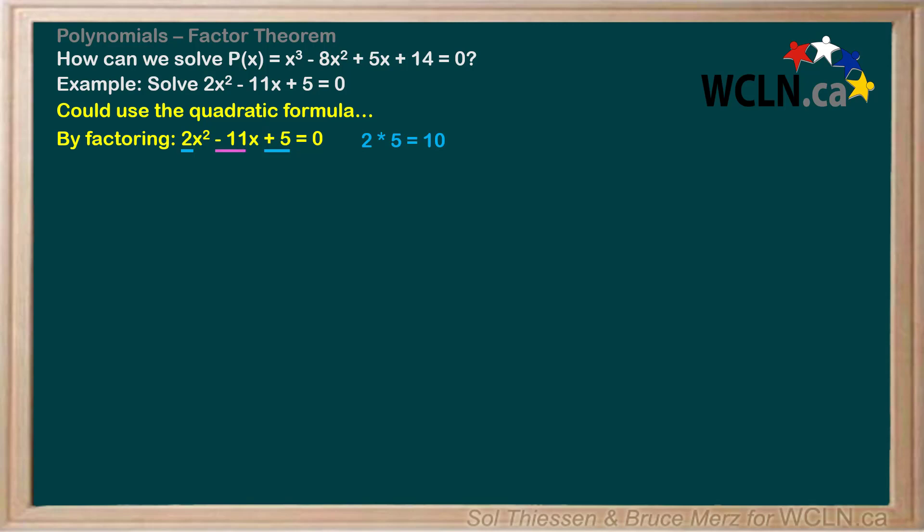Now we look to the coefficient on the x term. We're looking for two numbers that multiply to give us our magic number, 10, and add to give us the coefficient on the x term, -11. I'm going to jump right to -1 and -10, but if that's not obvious to you, you could write out all the factor pairs of 10, both positive and negative, and sift through them until you come up with one that works.